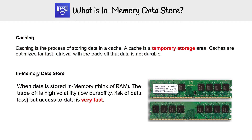Now let's talk about in-memory data stores, because that is what ElastiCache is. It's when data is stored in memory — literally think RAM, because that's what it's going into. The trade-off is high volatility, meaning low durability, which means there is a risk of data being lost.